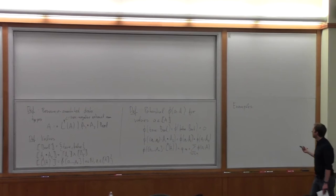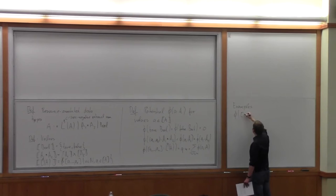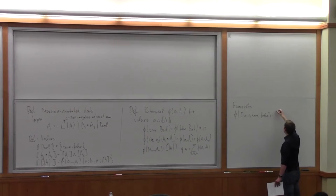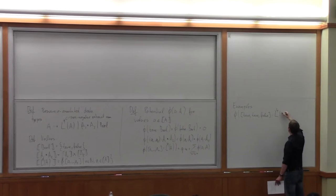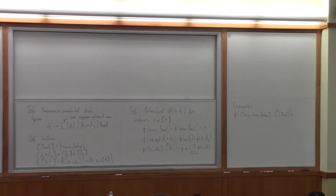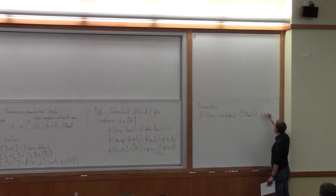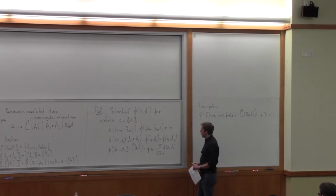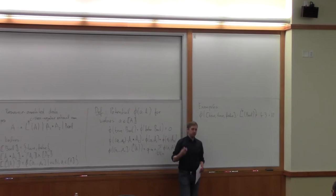Let's look at a few examples. If we have a list of booleans — true, true, false — and we say this list has potential 4, what is the potential? It's 12: 4 times 3 equals 12. So we have this type system now and we're going to define a type system that will use this potential to pay for the cost as we go along.